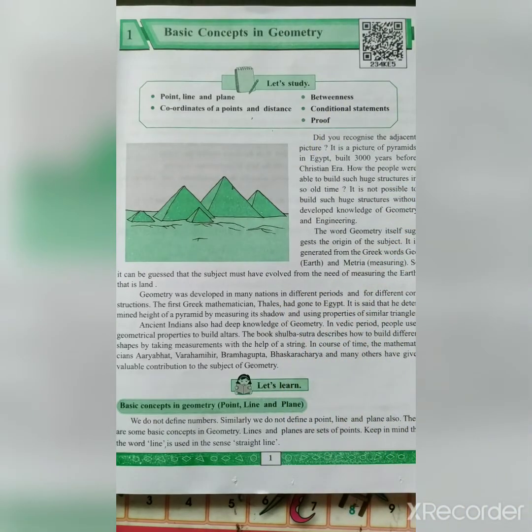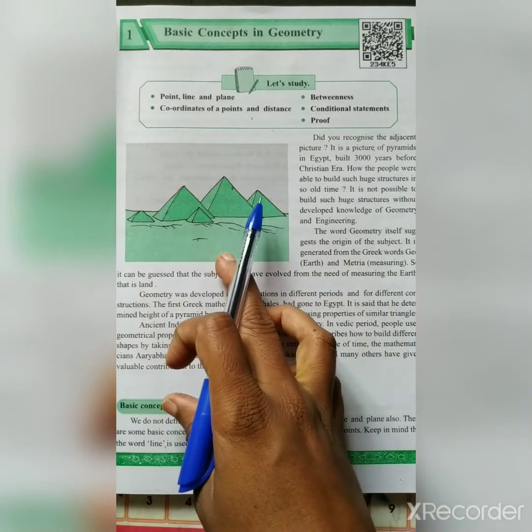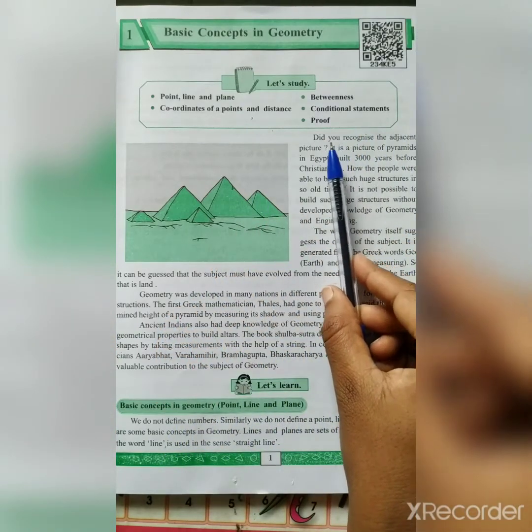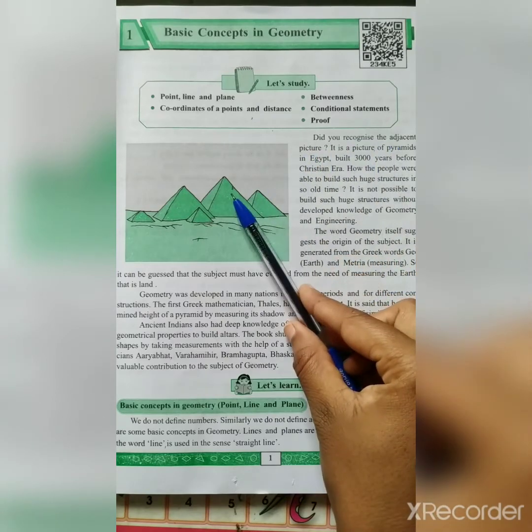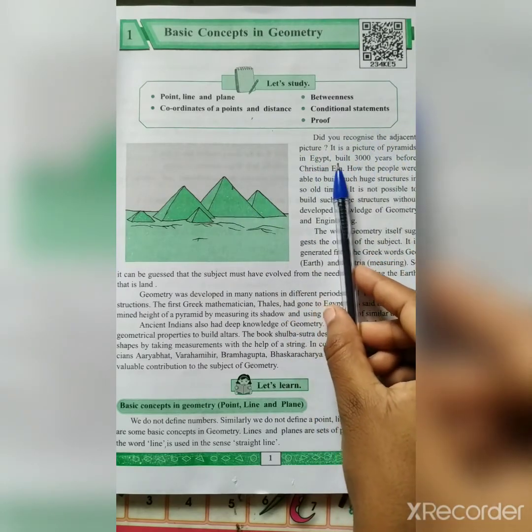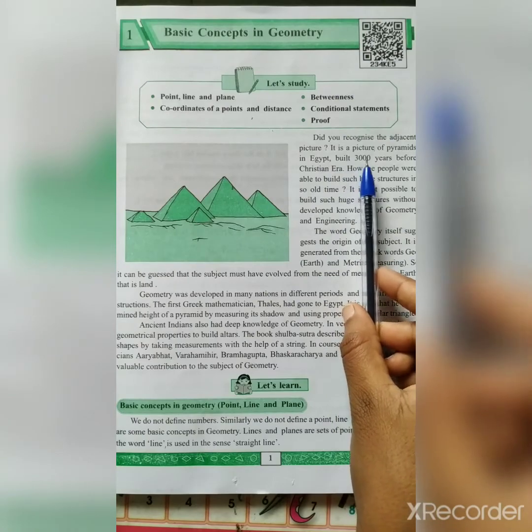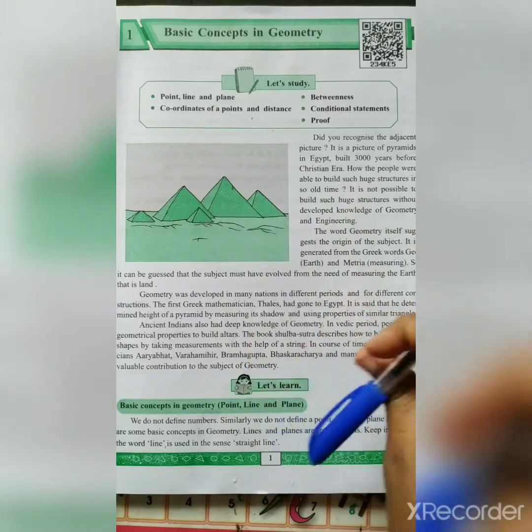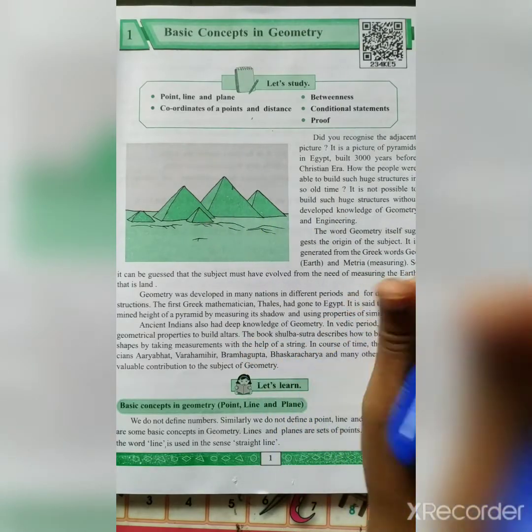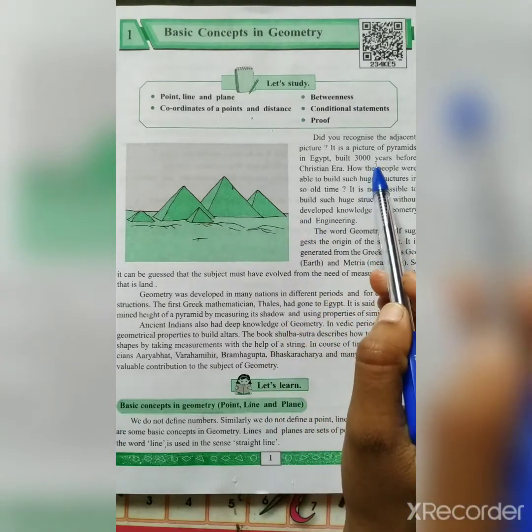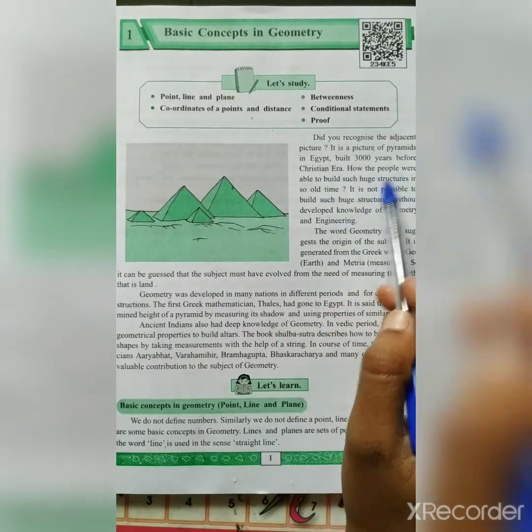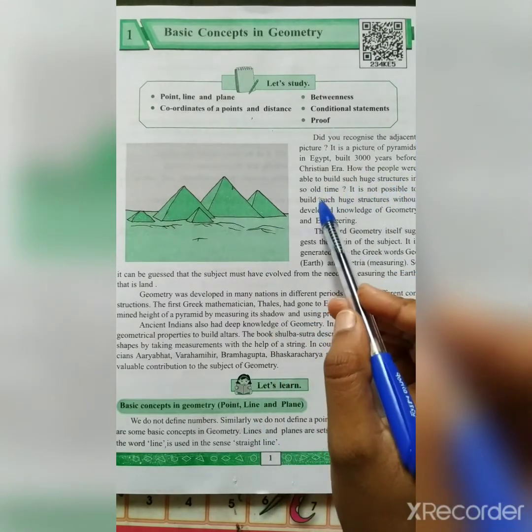In your textbook, on first page, there is one picture given. There is information given about this picture. Did you recognize the adjacent picture? It is a picture of pyramids in Egypt, built 3000 years before Christian era.